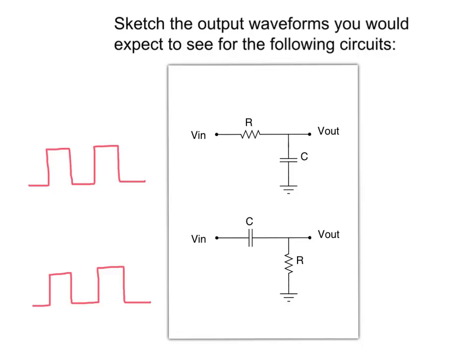Square waves are very important test signals as they are a source of many frequencies. By observing what these circuits do to the shape of a square wave, deductions can be made about how the circuit will respond to low and high frequencies.